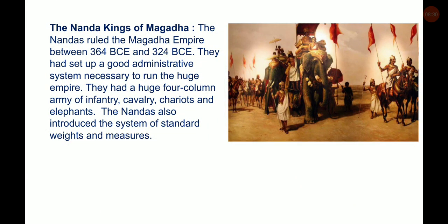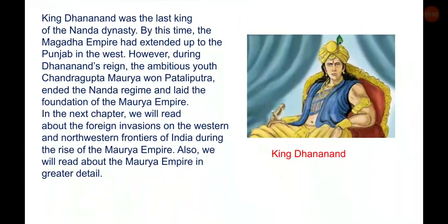The Nanda kings ruled the Magadha empire between 364 BCE to 324 BCE. They had set up a good administrative system necessary to run the huge empire. They had a huge four-division army of infantry, cavalry, chariots and elephants. The Nandas also introduced the system of standard weights and measures. King Dhanananda was the last king of the Nanda dynasty, and by this time the Magadha empire had extended up to Punjab in the west.